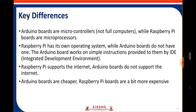What are the key differences? Arduino boards are microcontrollers, not full computers, while Raspberry Pi boards are microprocessors. Raspberry Pi has its own operating system while Arduino boards do not. Arduino works on simple instructions provided through the IDE, while Raspberry Pi supports the internet and Arduino boards do not. Arduino boards are cheaper while Raspberry Pi boards are a bit more expensive.